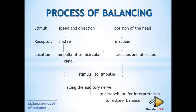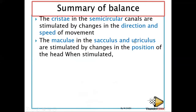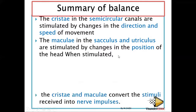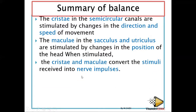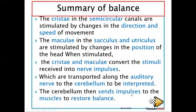Summary of balance: the cristae in the semicircular canals are stimulated by change in the speed and direction of movement. The maculae in the saccule and utricle are stimulated by change in the position of the head. When stimulated, the cristae and maculae convert the stimuli into nerve impulses, which are transported along the auditory nerve to the cerebrum for interpretation. The cerebrum then sends impulses to the muscles to restore balance.